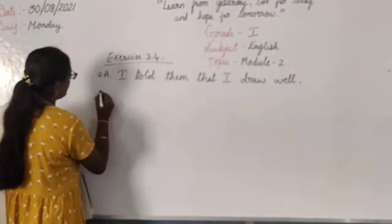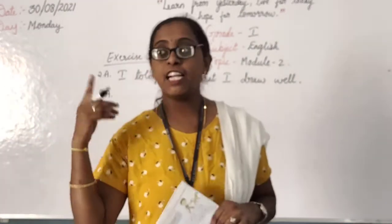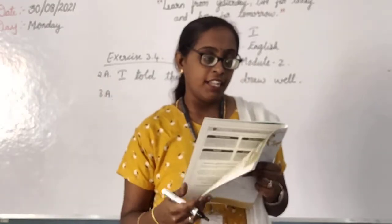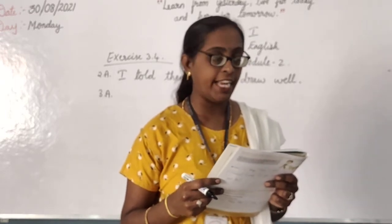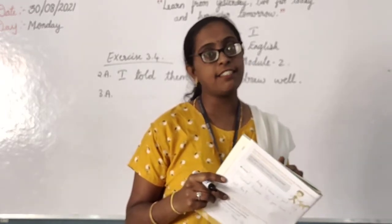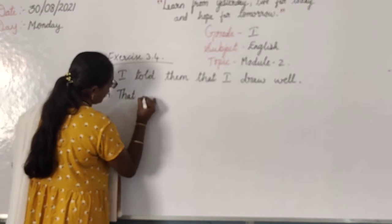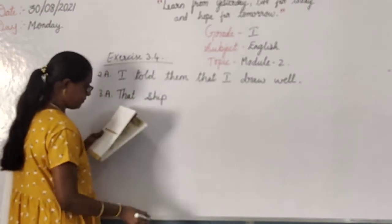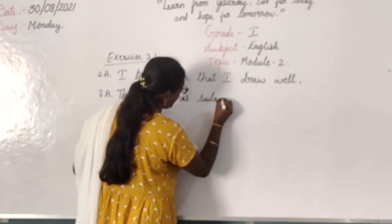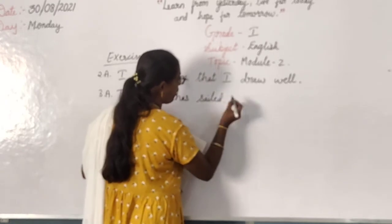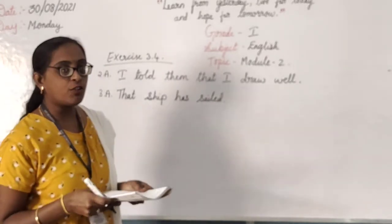Then next is third. What is the third one? Let us see. That ship has sailed. That ship has sailed. So here question mark is given, but question mark is not correct. That ship has sailed — that is a sentence, it is not a question. So the answer is: That ship has sailed. Full stop. Don't put question mark, full stop. This is the only mistake. Third question done.